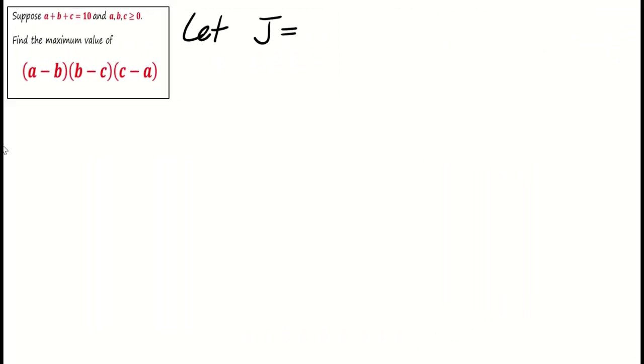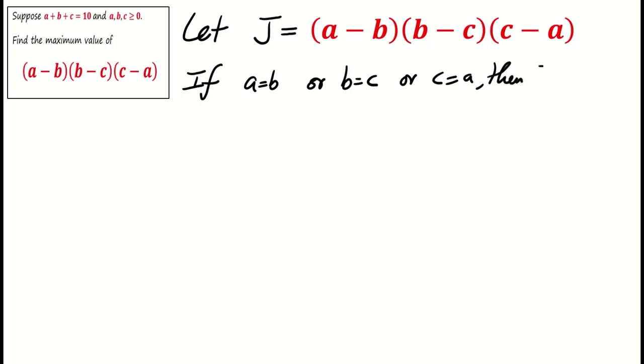Let's denote our expression as J equals (a minus b) times (b minus c) times (c minus a). It's a common misconception that the maximum value is attained when a equals b equals c. But this is not true for our problem. Observe that if a equals b, or b equals c, or c equals a, then J equals zero.